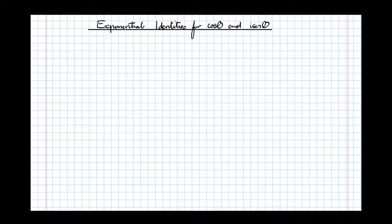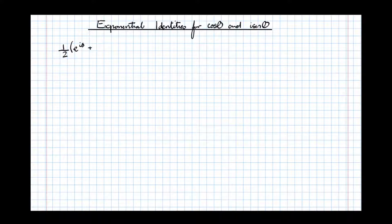In this video we're going to have a look at deriving the identities for cos θ and i·sin θ in terms of the exponential function, and have a look at putting them into an exam context. The first thing I'm going to propose is that ½(e^(iθ) + e^(-iθ)) is identical to cos θ.